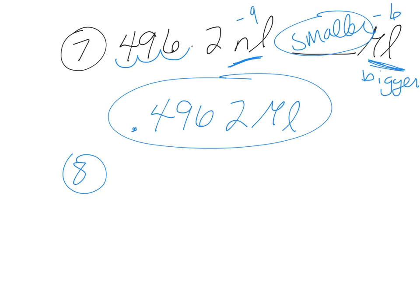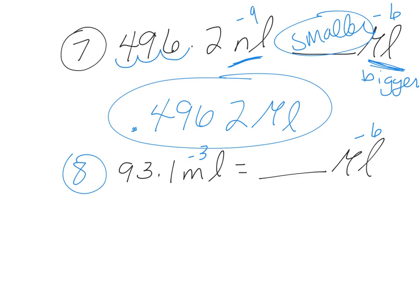Number eight: 93.1 milliliters is equal to how many microliters? A milli is 10 to the negative 3 and a micro is 10 to the negative 6. There's a difference of three, so let's move the decimal three places. We're going to a smaller unit, so I need a bigger number — one, two, three. The answer is 93,100 microliters.